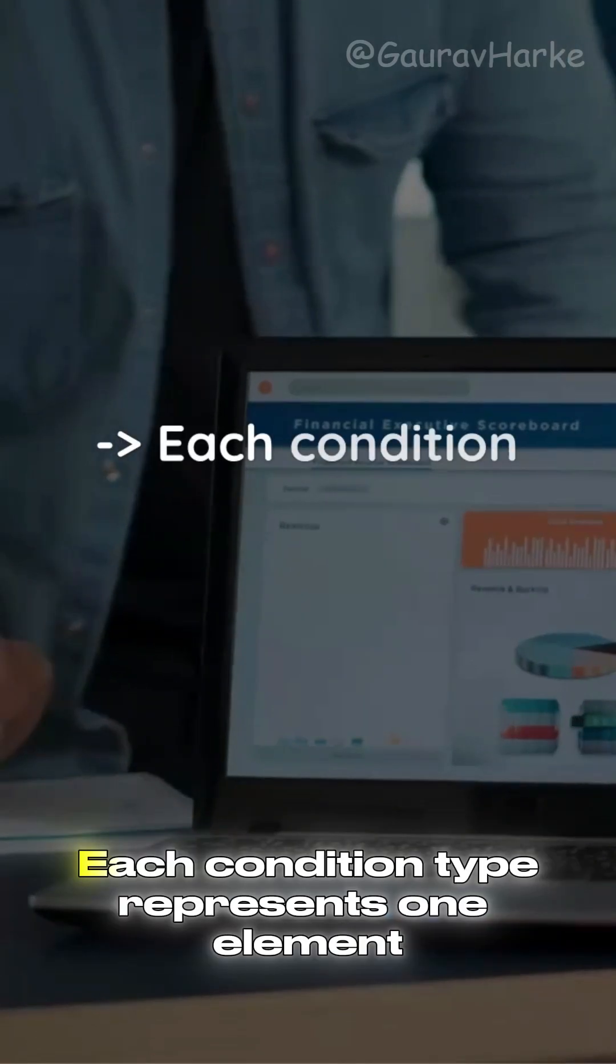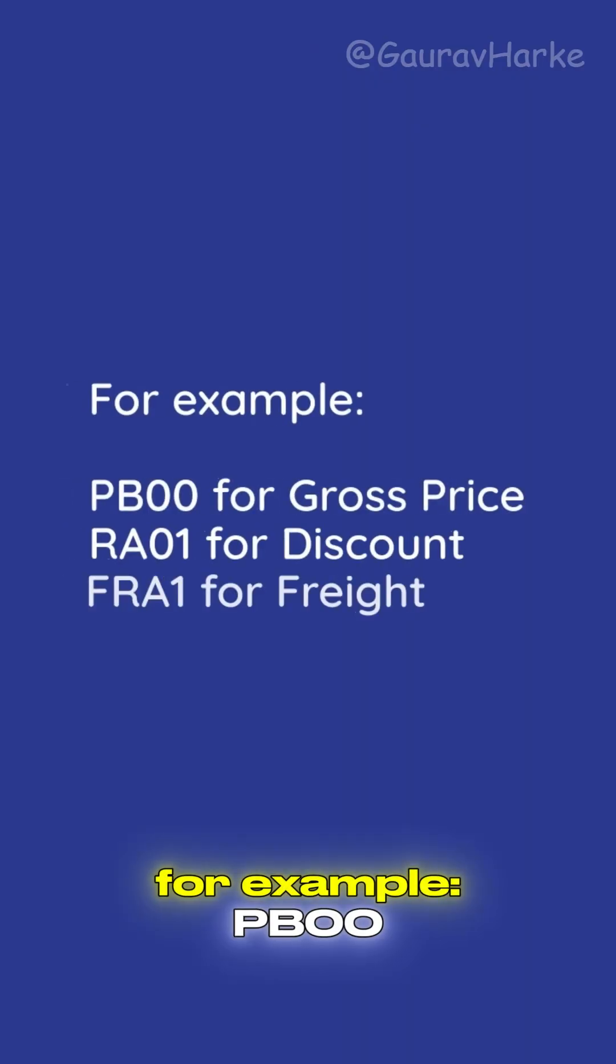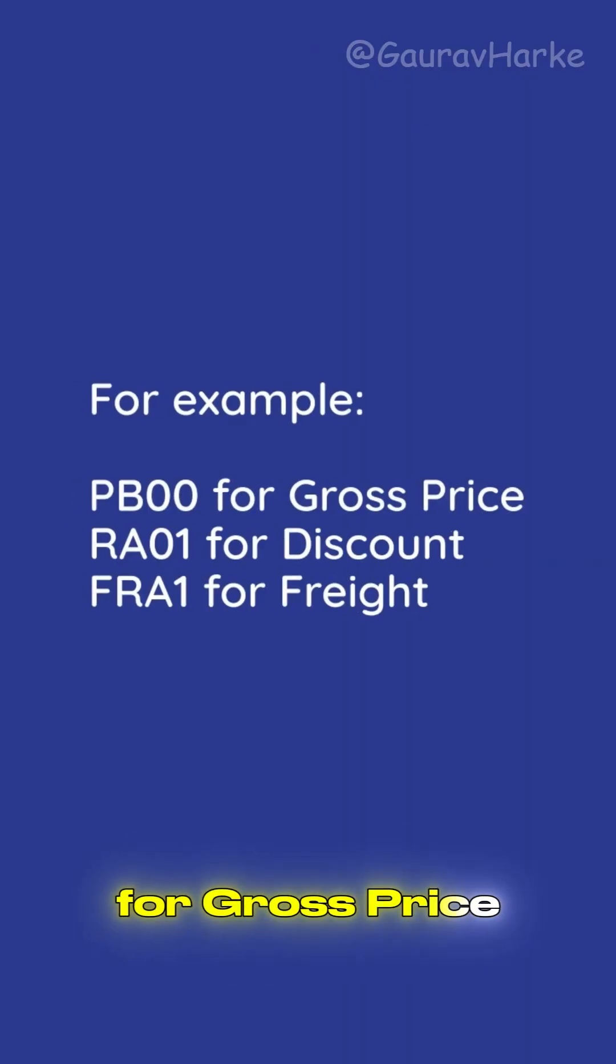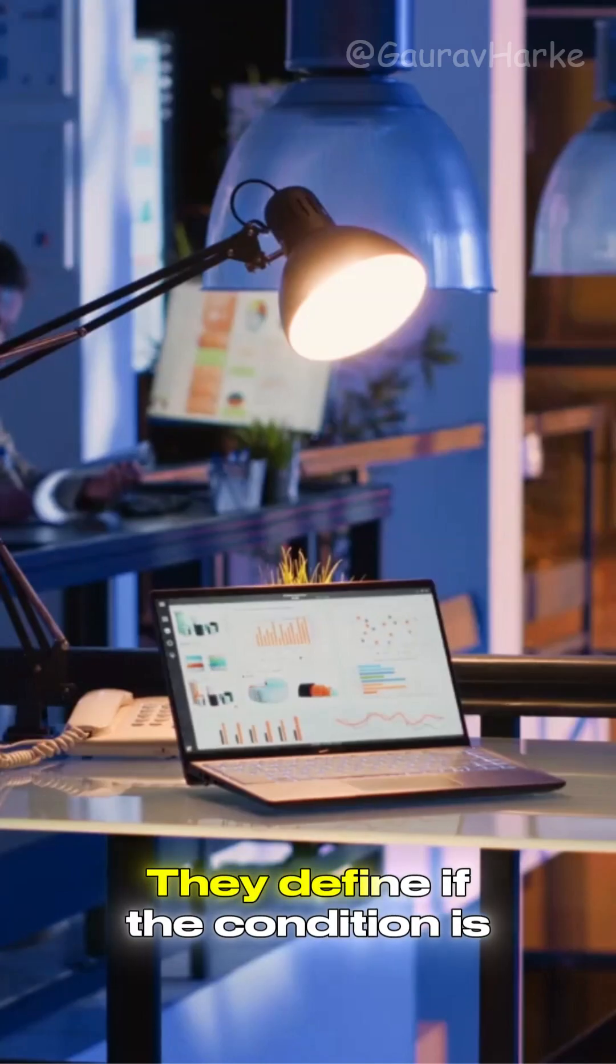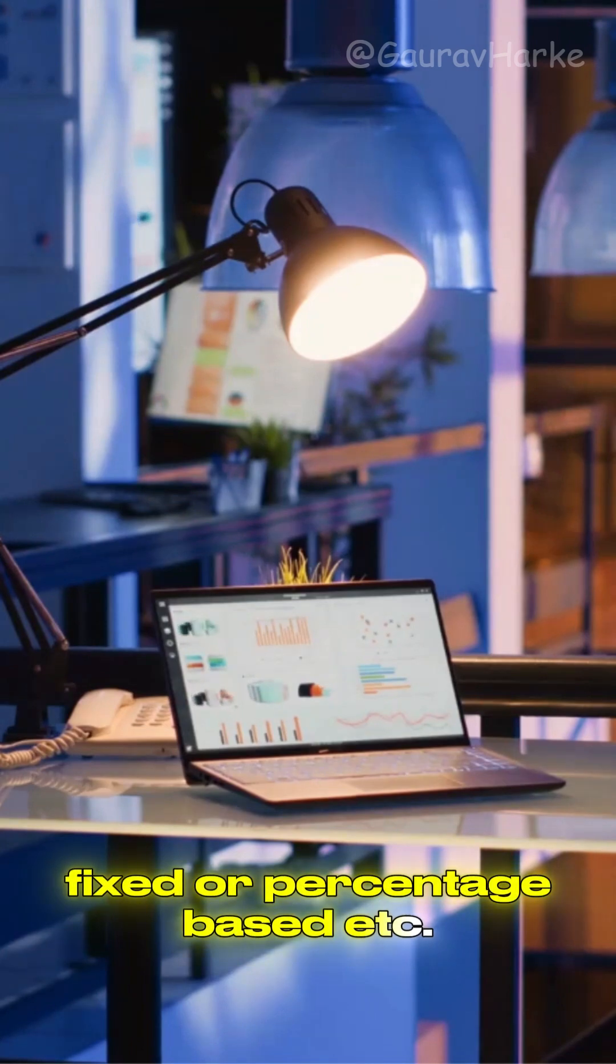Question 2: What are condition types exactly? Each condition type represents one element in the price. For example, PB00 for gross price, RA01 for discount, FRA1 for freight. They define if the condition is manual or automatic, fixed or percentage-based.